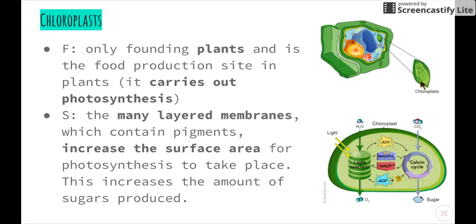Basically, looking at the last three in particular — the mitochondria, the endoplasmic reticulum, and the chloroplast — by having many layers or folds, we increase the surface area. This really helps those organelles to carry out reactions at a much quicker rate, ensuring that the cell is provided with all the nutrients, chemicals, etc. that it requires. And that brings us to the end of this video. Thank you.